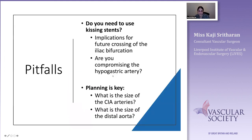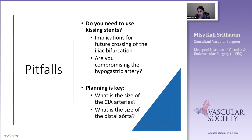When thinking about kissing stents, ask yourself: are you sure you actually need kissing stents? Where is the hypogastric artery in relation to the lesion? The hypogastric artery plays a significant role. Also consider the size of the common iliac arteries and how you're sizing your stents — I tend to use one-to-one sizing. If you do use one-to-one sizing, consider the size of the distal aorta and how those stents will sit in it.